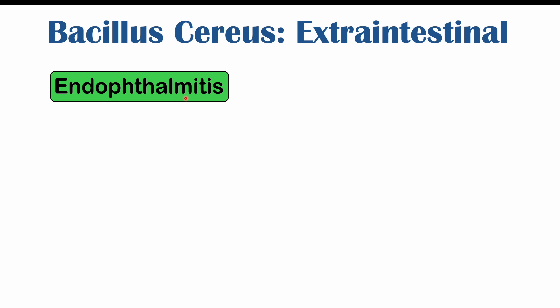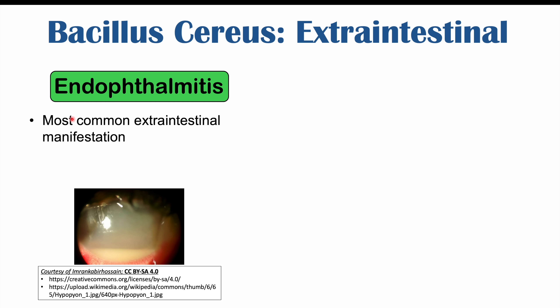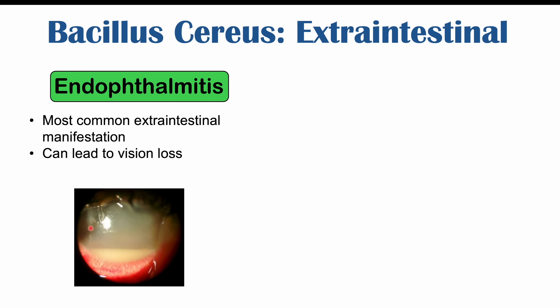Moving on to extraintestinal manifestations of Bacillus cereus infection — these do not occur from eating rice or other contaminated foods, but by other mechanisms. One of them is known as endophthalmitis, which is the most common extraintestinal manifestation. This is where there's essentially pus within the eye. It can lead to vision loss, and it's going to be due to ocular penetration injuries — Bacillus cereus bacteria on an object that then penetrates into the eye, introducing the bacteria and leading to this manifestation.